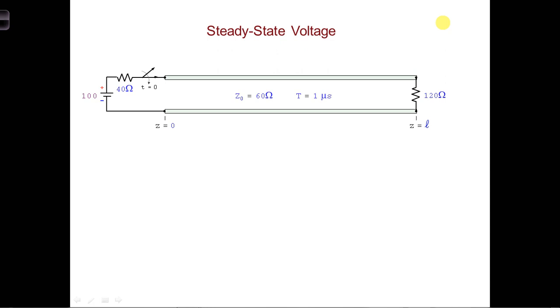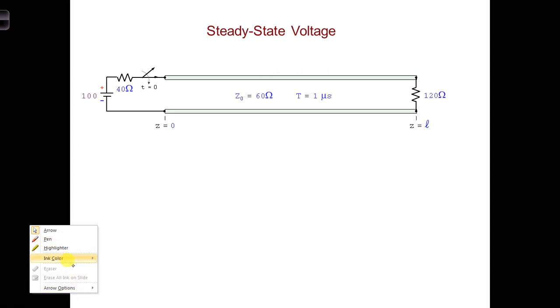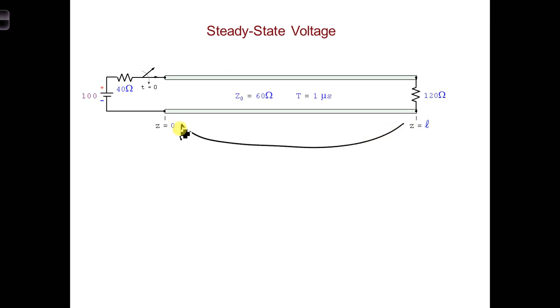So now, using a voltage divider for the 120 ohm resistor connected directly at z equals zero, we get the steady-state voltage is VG·RL over RG plus RL. And once you plug in the numbers that you see here, we're going to get 75 volts.